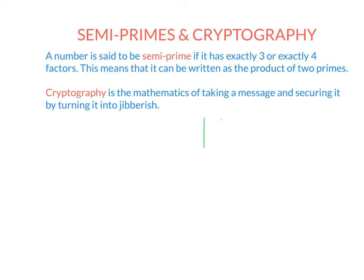The number 14 is a semi-prime. This is because it can be written as 7 times 2 — a prime number times a prime number. If I were to find the factors of 14, they would be 1, 2, 7, and 14. This has exactly four factors.